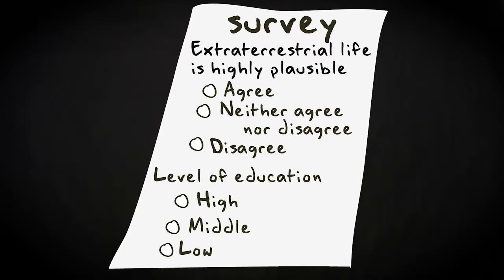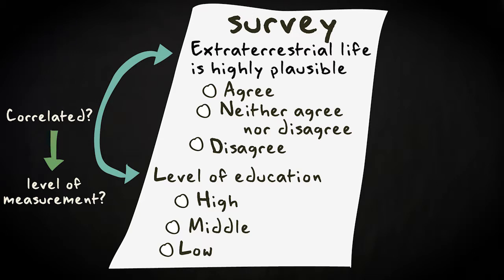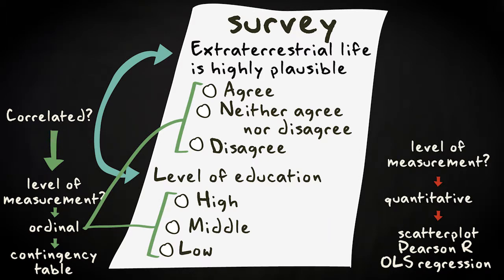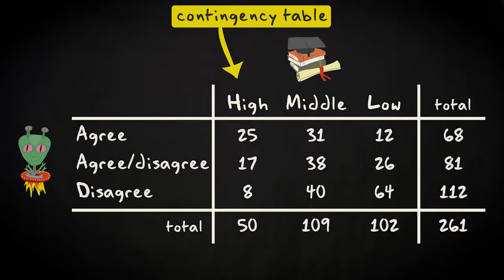The main question I want to answer is if my two variables are correlated. The first thing I need to do is assess the level of measurement of my variables. And as both variables are measured on an ordinal level, I will look at their contingency table. After all, a scatter plot, Pearson's R, and OLS regression analysis are only allowed if my variables are measured quantitatively. This is the contingency table.